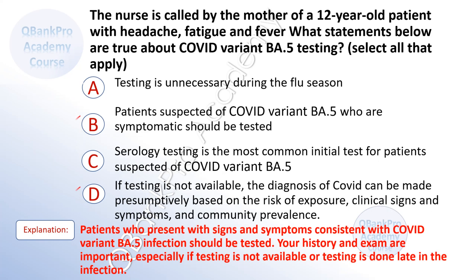The correct answers are B — patients suspected of COVID variant BA5 who are symptomatic should be tested — and D — if testing is not available, the diagnosis of COVID can be made presumptively based on the risk of exposure, clinical signs and symptoms, and community prevalence. Patients who present with signs and symptoms consistent with COVID variant BA5 infection should be tested. Your history and exam are important, especially if testing is not available or testing is done late in the infection.